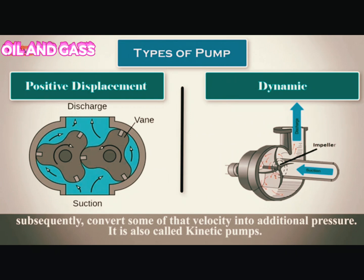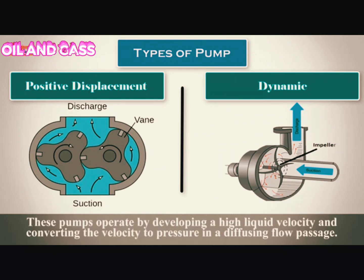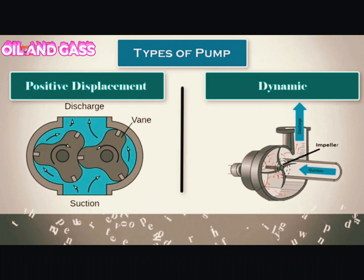Dynamic pumps are also called kinetic pumps. These pumps operate by developing a high liquid velocity and converting the velocity to pressure in a diffusing flow passage.